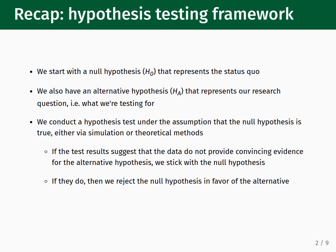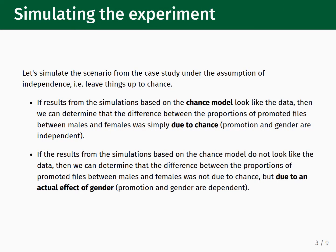This may all still feel a bit abstract, and that's okay. It can take some time to become comfortable with the details of conducting a hypothesis test. Let's return to the gender discrimination study we were initially discussing and work through the steps as a concrete example. We will use a random simulation to generate the null distribution, which represents the range of experimental outcomes we could expect under the assumption that there is no gender discrimination. We then take our randomly generated null distribution and compare it against the collected data.